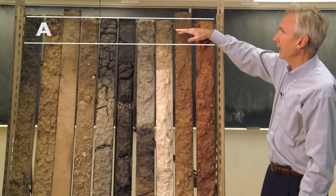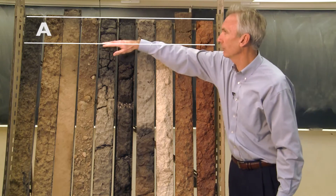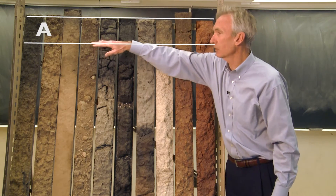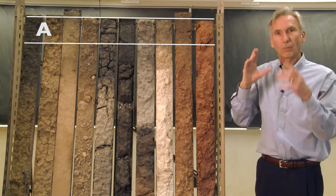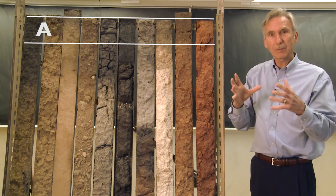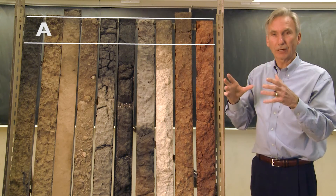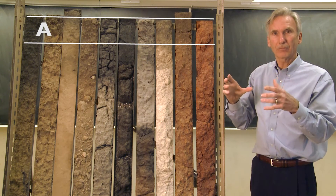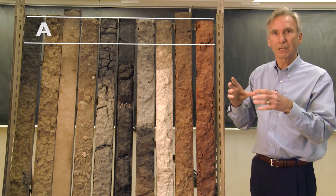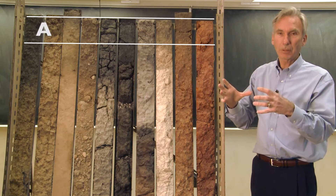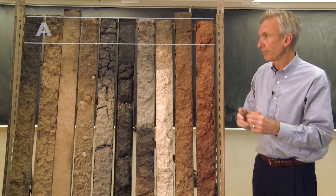It's usually dominated by organic matter, as you can see in these profiles. Organic matter imparts a very dark color — either black or dark brown. That is typical of an A horizon.